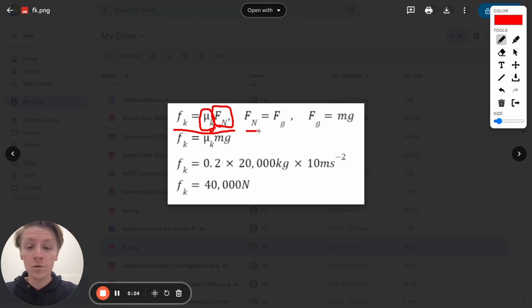But we know that normal force is equal to the force of gravity. Remember, we talked about that. Those things are canceling out. That's why the train's not falling up or down. And we know that the force of gravity is equal to the mass of an object times the gravitational acceleration, which is always about 10 meters per second squared.